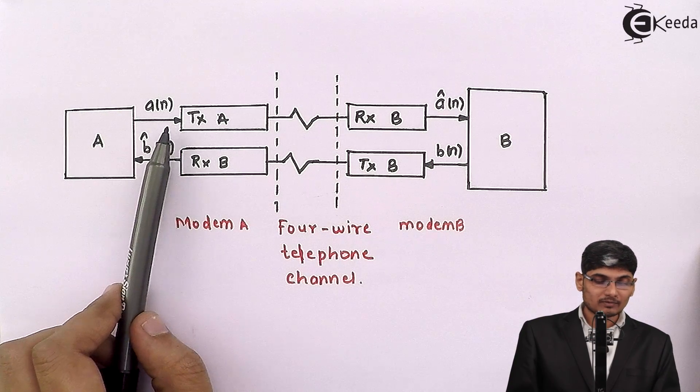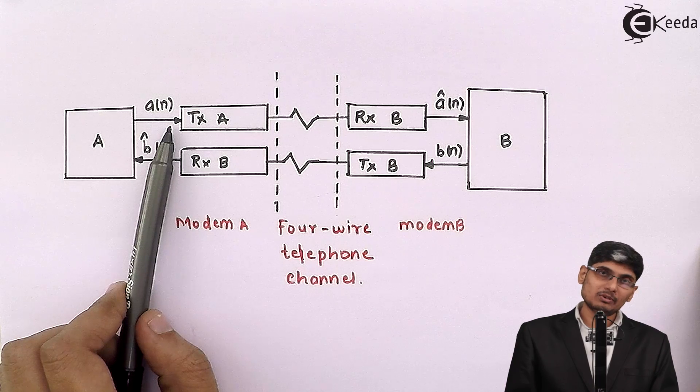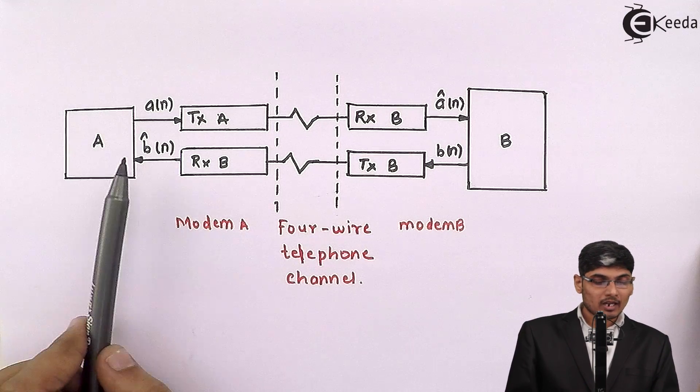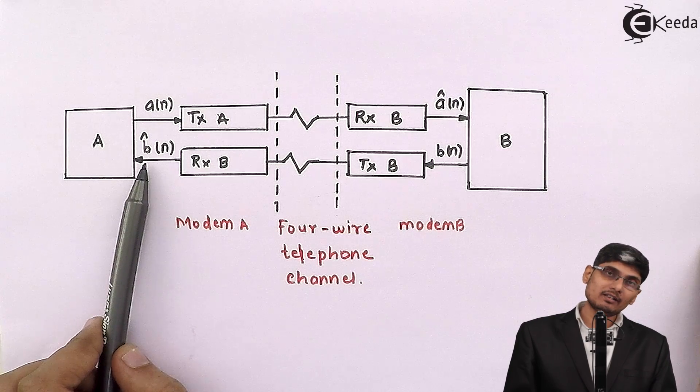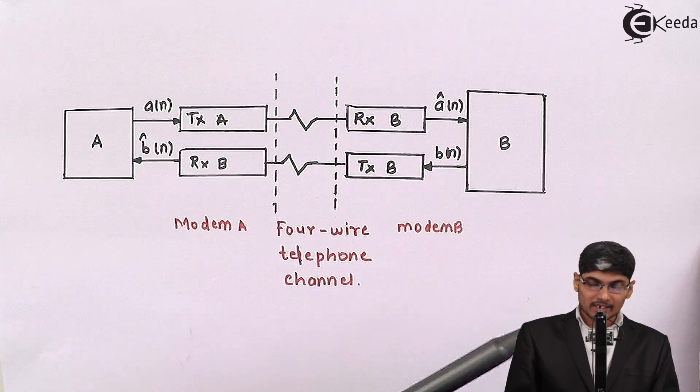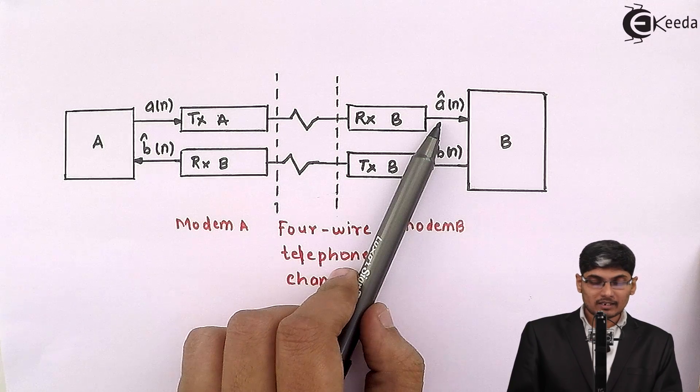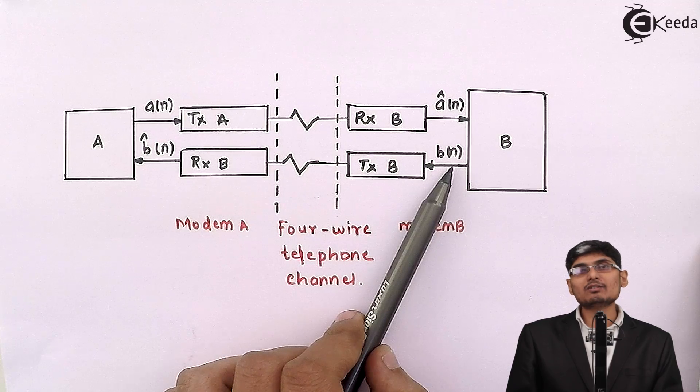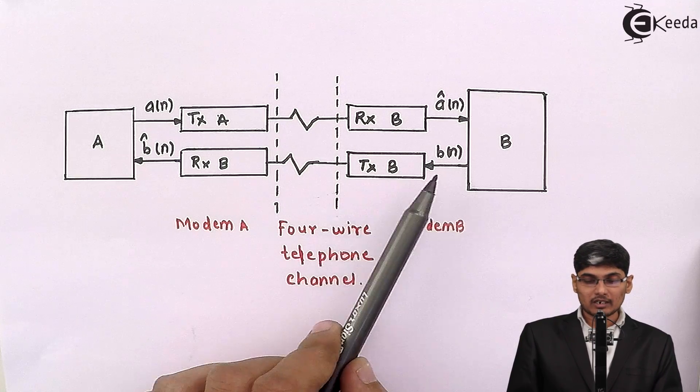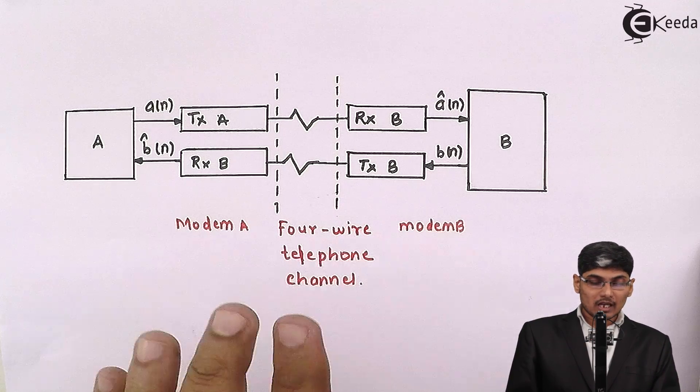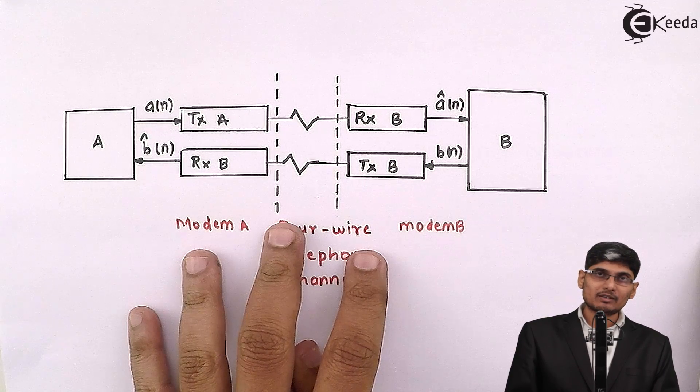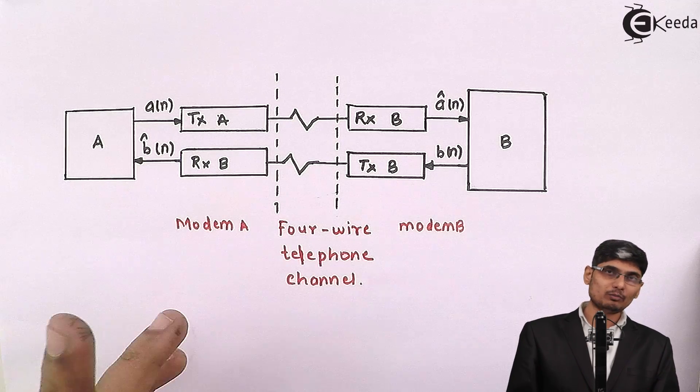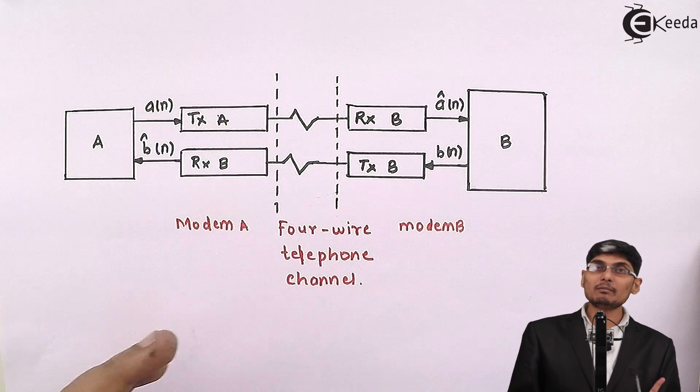A-N path is the transmission path of data for entity A, and B-N dash is the receiving path for entity A, whereas A-N cap is the receiving end of entity B and B-N is the transmission of entity B. This is a mode in which data can flow to and fro, that is from A to B and B to A simultaneously.